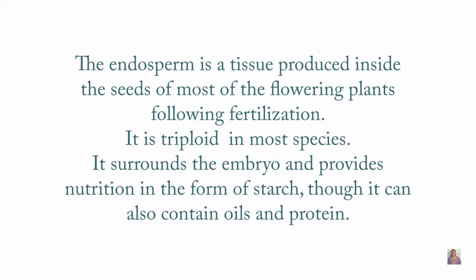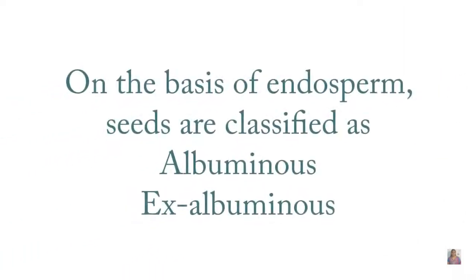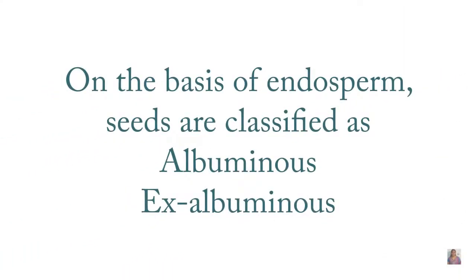Seeds are also classified based on the endosperm present. The endosperm is a tissue produced inside the seeds of most flowering plants after fertilization. It is usually triploid, surrounds the embryo, and provides nutrition in the form of starch. Sometimes it also contains oils and protein. On the basis of endosperm, seeds are classified as albuminous and exalbuminous.